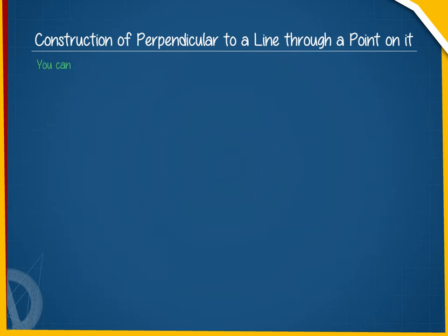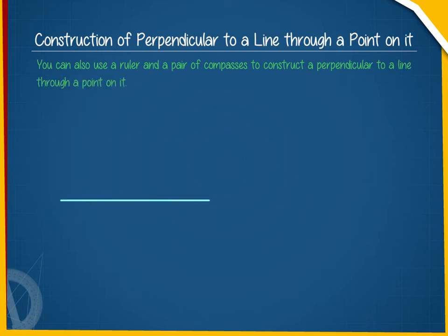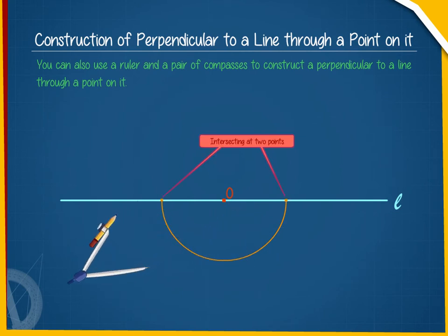You can also use a ruler and a pair of compasses to construct a perpendicular to a line through a point on it. Let us take the line L and the point O. Taking O as the center and a suitable radius, draw a semicircle that intersects the line L at two points, X and Y as shown here.